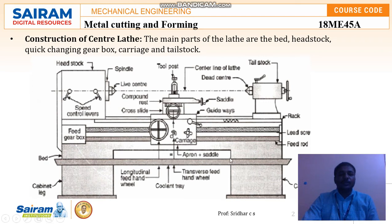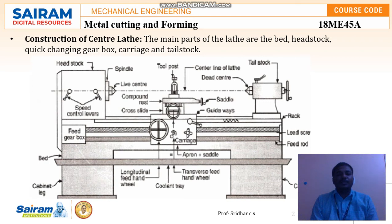The lathe machine can perform many operations and is one of the oldest machines in the automobile and manufacturing sector. Operations that can be performed include facing, turning, knurling, threading, eccentric cutting, and taper turning. These operations are simple and not as complicated as other machines. The main major parts are headstock, tailstock, carriage, and tool post.